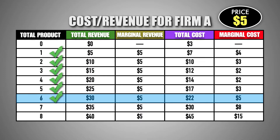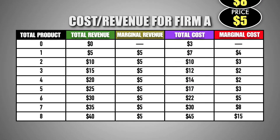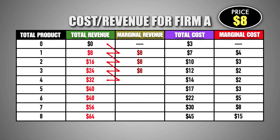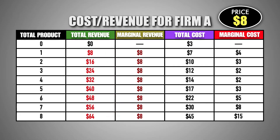Because profit maximization is set where marginal revenue equals marginal cost, any change in product price or production costs will influence the quantity of output that a firm will produce. Suppose that the price of good M increases to $8. With a new market price of $8, each additional unit of good M produced by the firm will now generate a marginal revenue of $8. When comparing marginal revenue to the marginal cost of producing each unit, the firm now has a motive to produce a greater quantity of output.